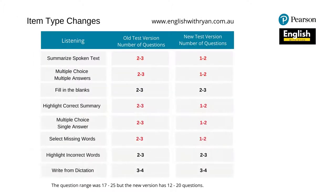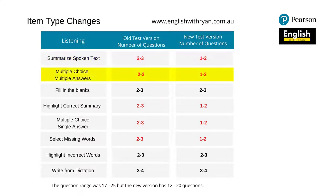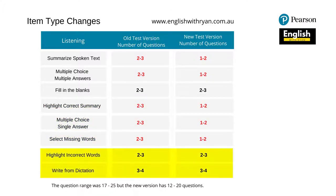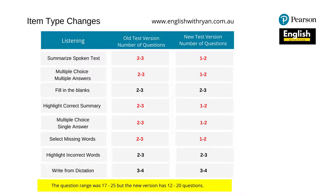The listening section shows the biggest changes. Summarize spoken text used to be 2 to 3 but now is 1 to 2 questions — a big difference in time since every question takes 10 minutes. Multiple choice multiple answers went down from 2 to 3 to 1 or 2. Listening fit in the blanks is unchanged. Highlight correct summary, multiple choice single answer, and select missing words all went down from 2 to 3 questions to 1 to 2. Highlight incorrect words and write from dictation remained unchanged. The question range was 17 to 25, now 12 to 20.